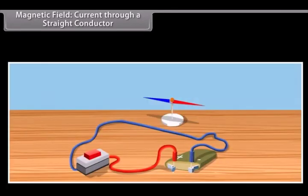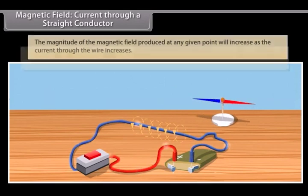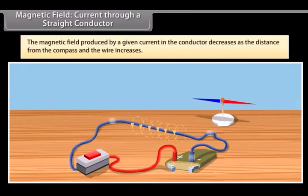As you have seen earlier, let us see what happens when we change the current that is passing through the wire. The effect on the compass also varies. If you increase the current, the deflection of the needle of compass will increase. From this we know that the magnitude of the magnetic field produced at any given point will increase as the current through the wire increases. Now, try moving the compass away from the current passing through the wire. You will see that the magnetic field produced by a given current in the conductor decreases as the distance from the compass and the wire increases.